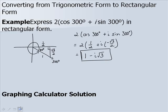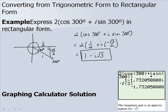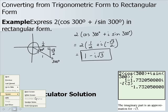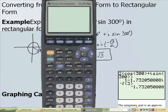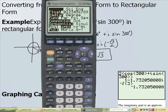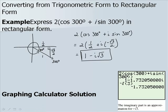Now let's look at our graphing calculator solution. You can type it in using i — notice on your calculator where the decimal button is, and above it in orange is the little letter i, so you press second and the decimal to enter it. You also want to make sure that you are in complex mode. Press mode and go down near the bottom where it says real, and make sure it's on a plus bi. You simply type in your trigonometric form and it gives you the rectangular form, though not in square root or radical form.